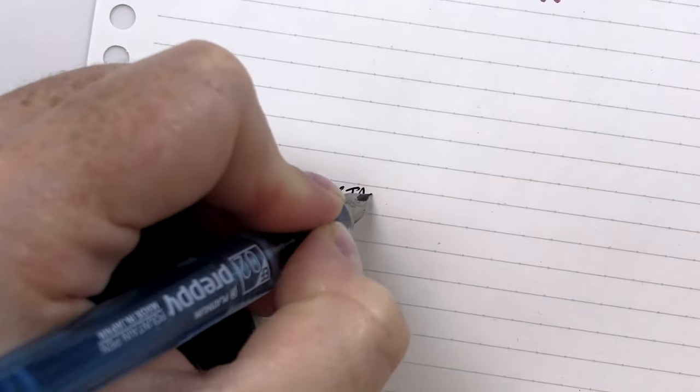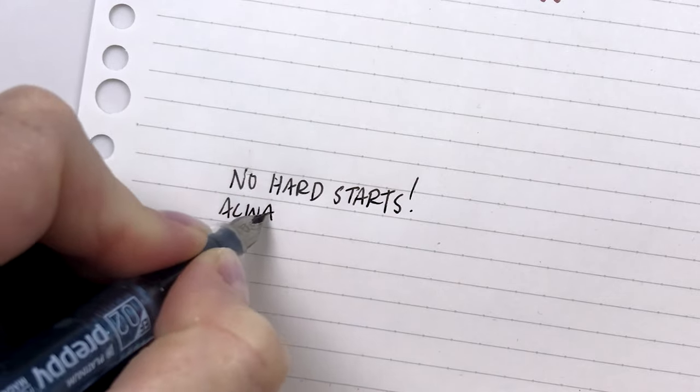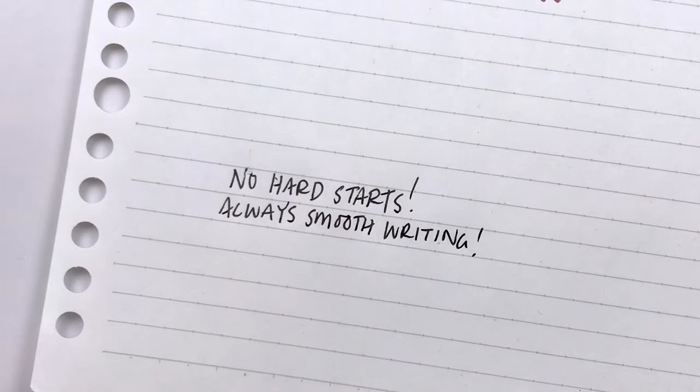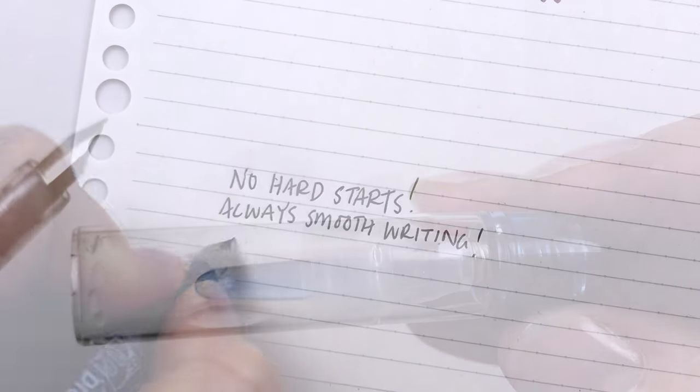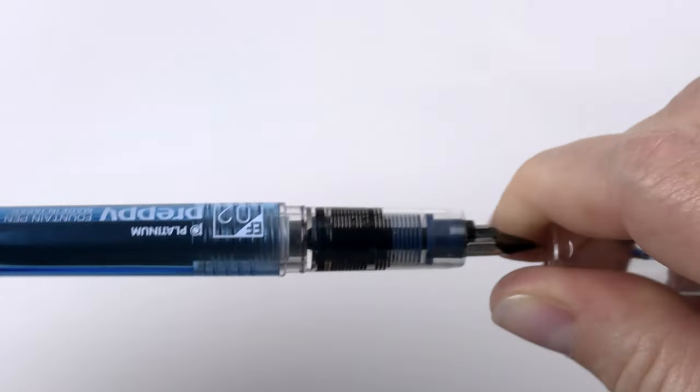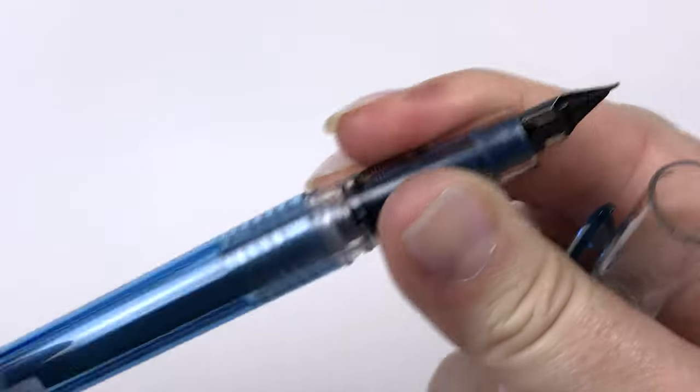I have had the same cartridge in here for at least eight months and it's a waterproof pigment ink and it has not dried out. It never hard starts, which means it doesn't take a while for the pen to start. You just uncap it and you go. They have three different sizes. This one here is the extra fine, which is the 0.2.